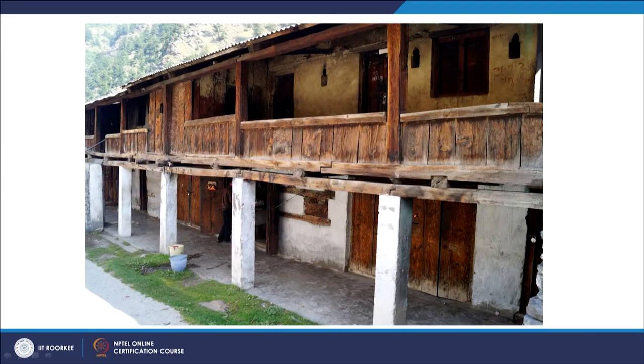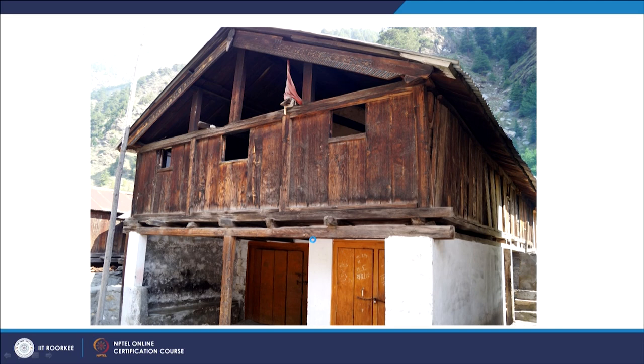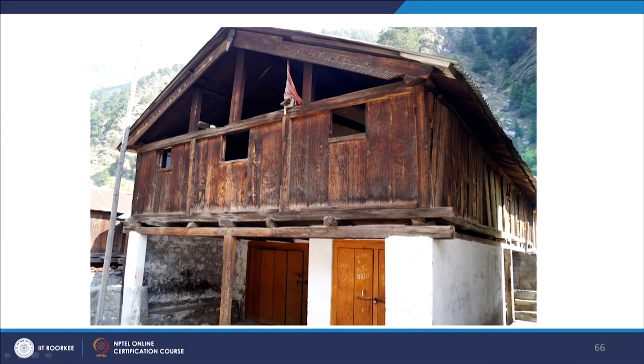The ground floor is either converted into shops or used for cattle, with people normally living on the first floor. Everything was made of timber because earlier communities had access to deodar wood. At higher altitudes, accessibility to deodar was a prominent factor. Skilled labor in those days addressed both the decorative aspects and the construction technology. In cold climates, wooden houses keep you warm in winter and cool in summer — you can see the intricate work which artisans produced.